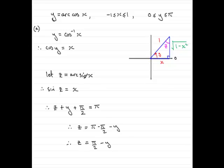Well, we wanted to know what arc sine x was equal to in terms of y. Well, it's equal to z and z is equal to this. So therefore, we can wind this up by saying arc sine x is equal to pi upon 2 minus y. And there you have it.